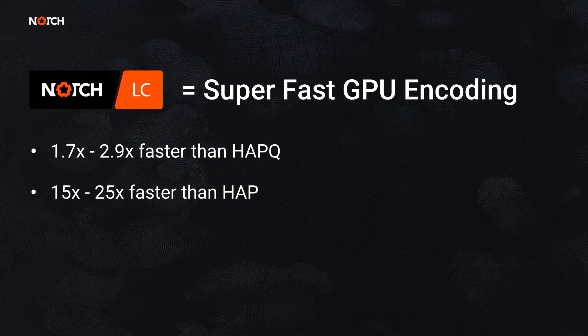A codec is only useful if you can transcode to it quickly. NotchLC is all about the GPU — we do all encoding and decoding using compute on the GPU. That means if you have a powerful GPU like a 1080 Ti, you get the benefit of that, and when NVIDIA brings out a card the next year with 15–20% more power, you'll get 15–20% better encode performance. It will continue to scale as GPUs get faster. For HD tests we are around 2.3 times faster than HAP-Q on average, and 15 to 25 times faster than HAP. It's always nice when you can actually encode the video faster than you can play it back.